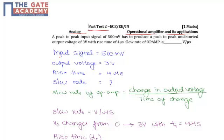The values of the input signal will be 500 mV, output voltage is 3 volts, and the rise time is 4 microseconds, and we need to calculate the slew rate.